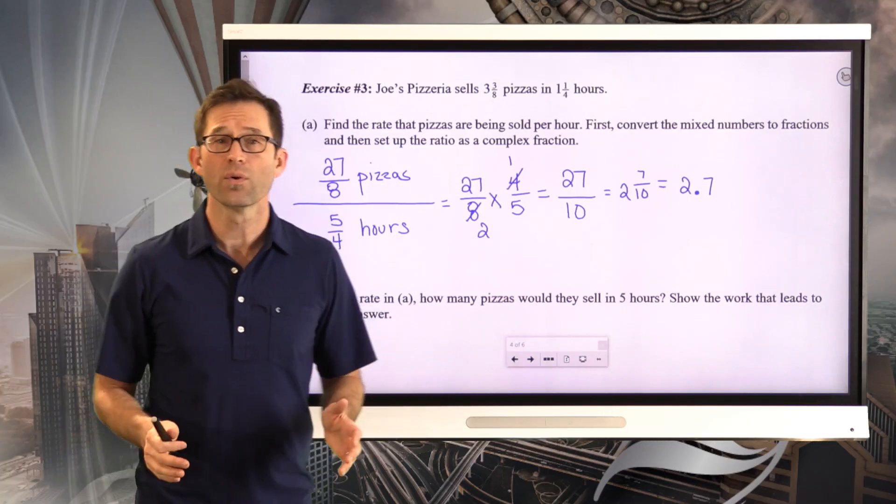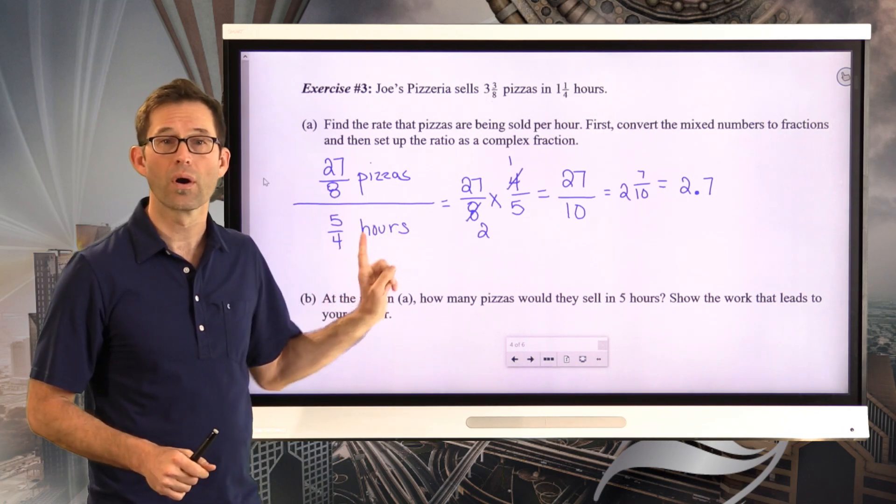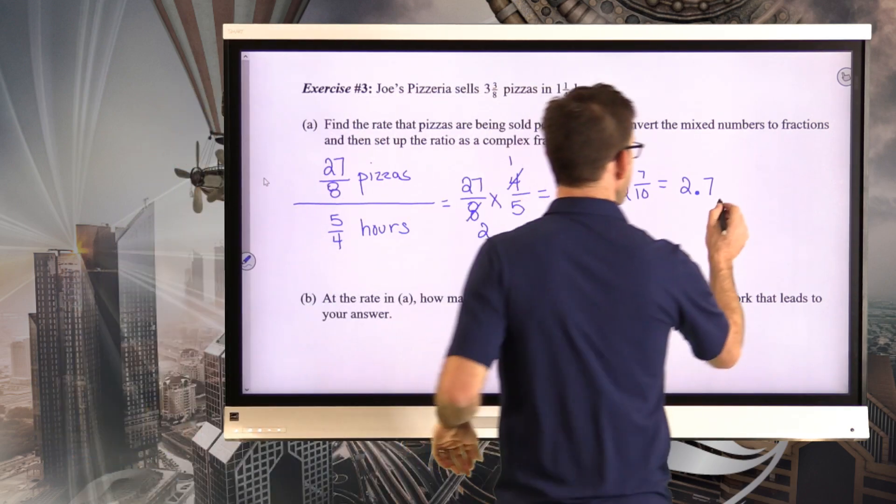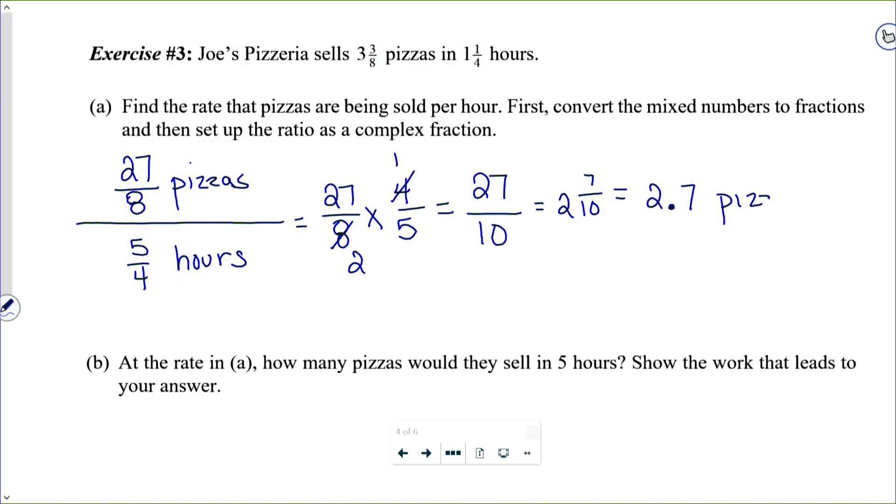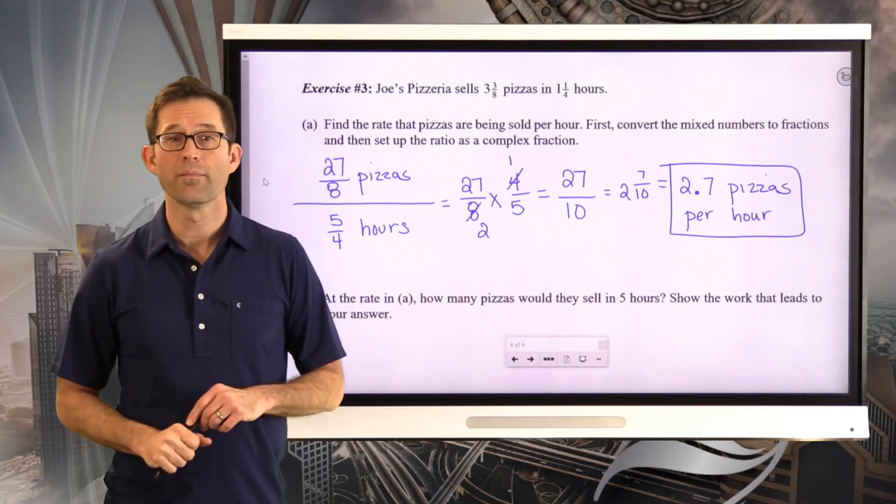Now, 2.7 what? Units. Pizzas per hour. That gives us a very good sense of what's going on. For every hour, they're selling 2.7 pizzas.